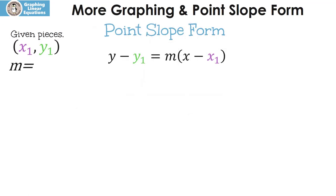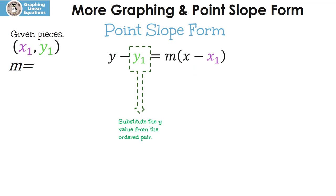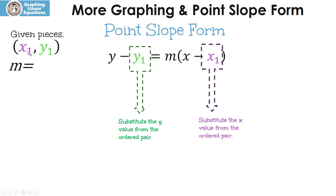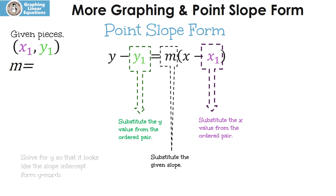Now that we know how to graph it, let's talk about the point-slope form. The y and the x are part of our answer, so we're not going to touch them — those stay there. The y1 is going to be substituted from the y value of the ordered pair, and x1 from the x value. The m is our slope, whatever they give us. Then we're going to do some algebra and solve for y so that it looks like the slope-intercept form y equals mx plus b.